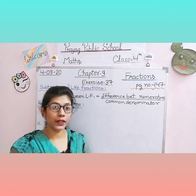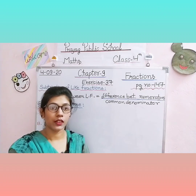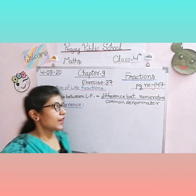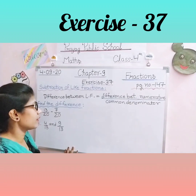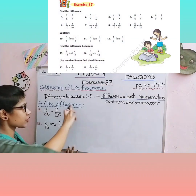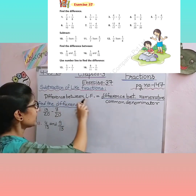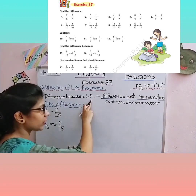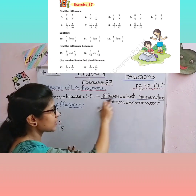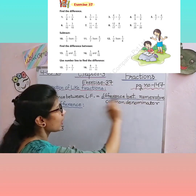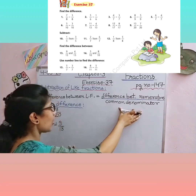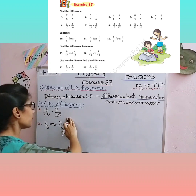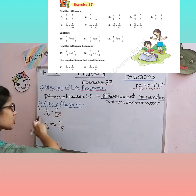Now we come to our next topic — subtraction of like fractions. Like fractions ka subtraction kaise find out karte hain? Exercise number 37 isi pe based hai, on page number 147. Subtraction of like fractions ka bhi rule hota hai: difference between like fractions = difference between the numerators upon the common denominator.